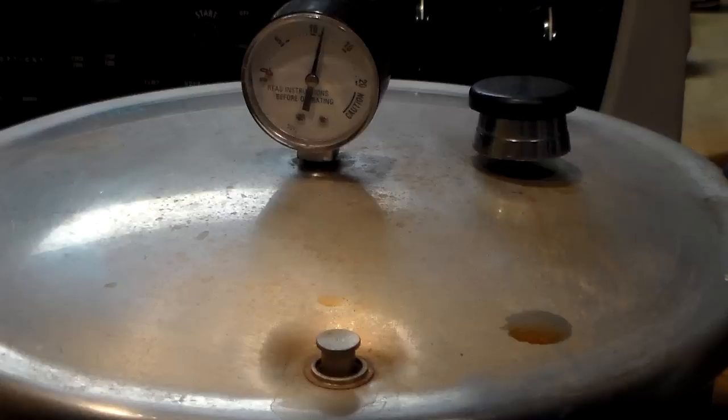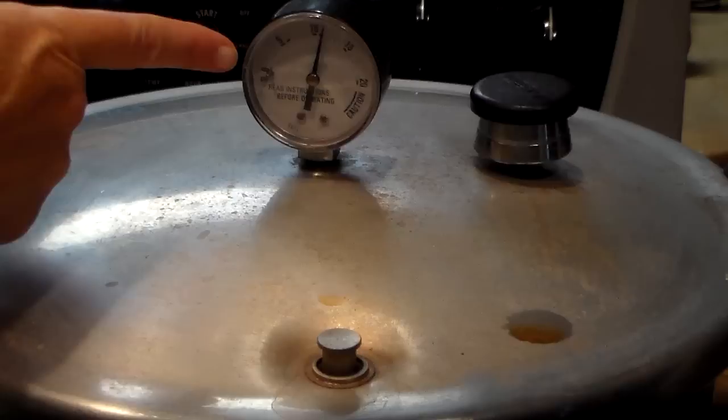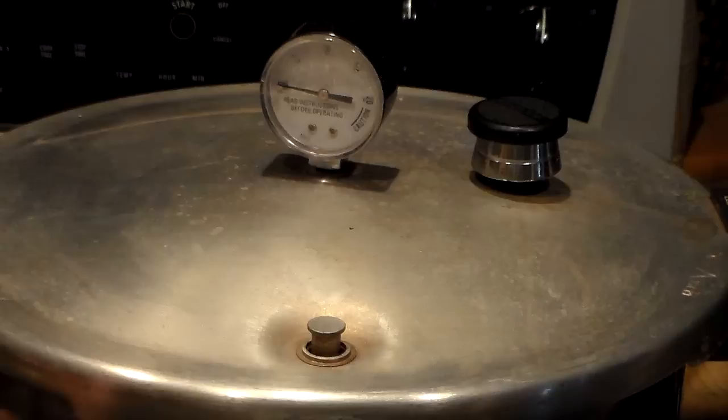I'm going to turn my burner off and slide the pressure cooker off the heat. We're going to leave the weight in place until the pressure comes all the way down. You'll know the pressure is all the way down because your gauge will move to zero and the pressure indicator will drop.